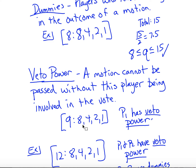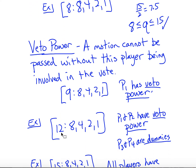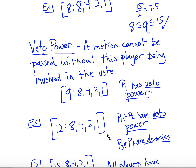Another example: quota is 12, player 1 has 8, player 2 has 4, player 3 has 2, player 4 has 1. If player 1 doesn't vote for something, players 2 through 4 can't make it pass — so player 1 has veto power. If player 2 doesn't vote, player 1's 8 plus 2 plus 1 is only 11, so it won't pass — player 2 also has veto power. Players 1 and 2 together make 12 and can pass anything. Players 3 and 4 cannot change any outcome, so they are dummies.